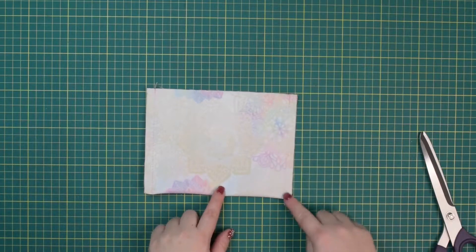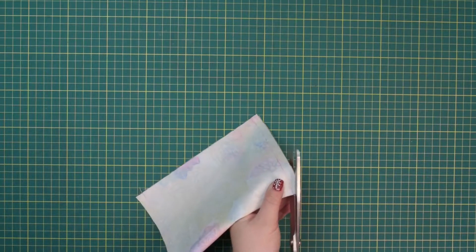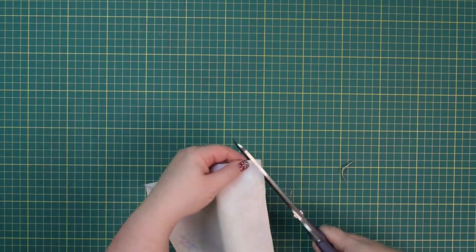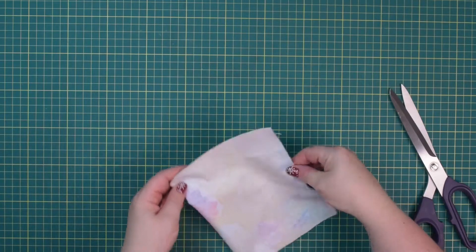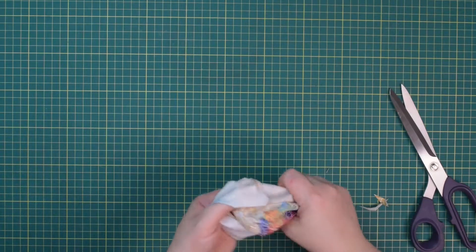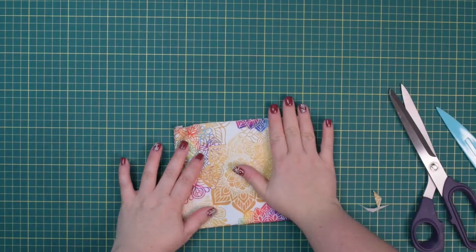After you've stitched both sides you can trim the seam allowance at the corners and then we're going to turn the pocket right side out. Now you can take this to the pressing station and press the seams flat.